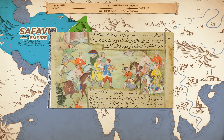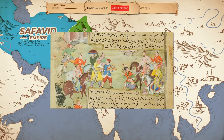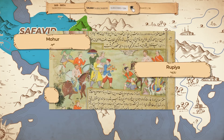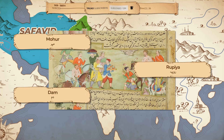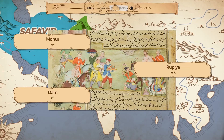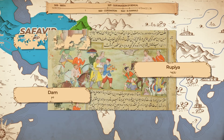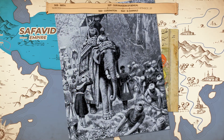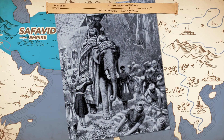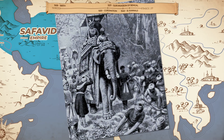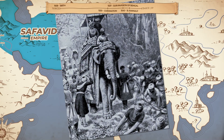He introduced a tri-metallic currency with the gold Mughar, the silver Rupiah, and the copper Dham. Additionally, he understood the need for Central Asian goods, especially warhorses, so he built a great road known as the Grand Trunk Road, which runs from Afghanistan to Bengal, connecting all of North India. Previously, this route was covered by many roads which weren't always in great condition.